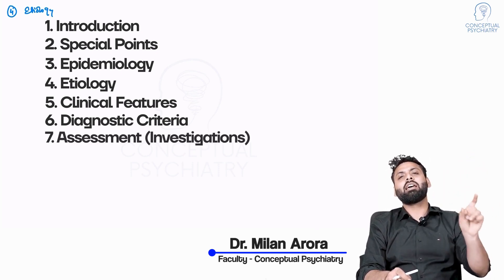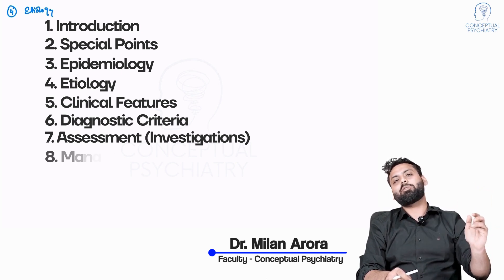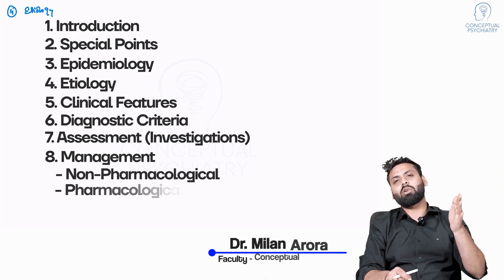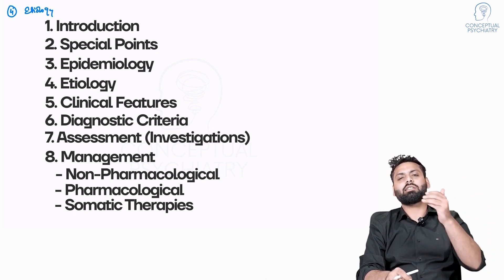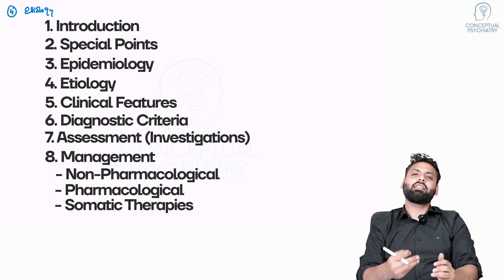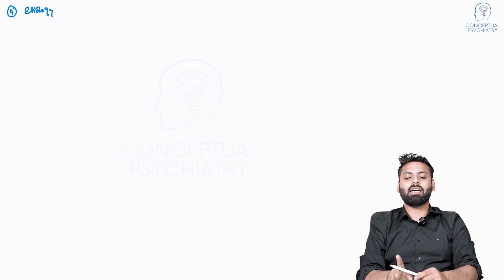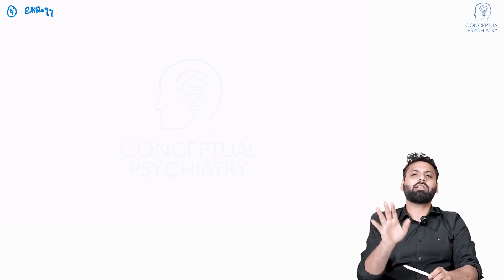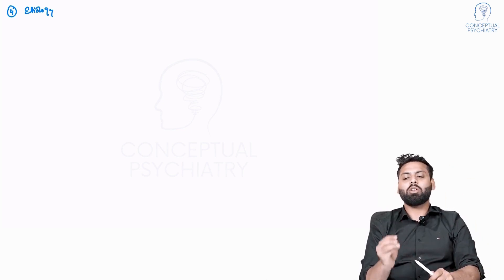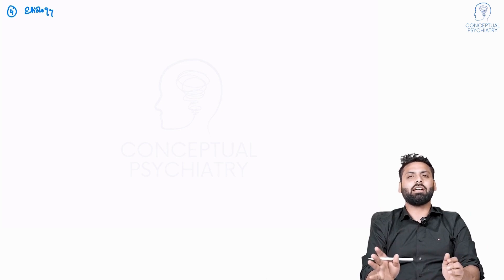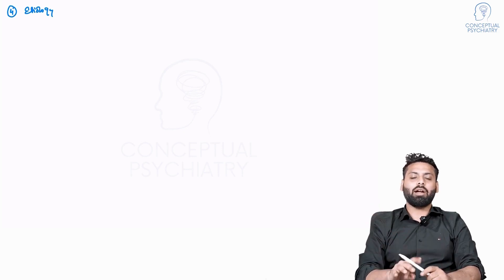Then we go to assessment — that is, investigations. Since we don't have specific investigations as such, we write the names of the relevant scales. Then we come to management, which we divide into non-pharmacological, pharmacological, and somatic parts. Somatic includes ECT, rTMS, tDCS, and similar. Finally, prognosis and prevention. These are basically 10 points. Any exam question comes for 10 marks — 10 points for 10 marks. Whenever you read a topic, clutch these 10 points. Fifteen pages of reading should suffice your 10 points and then your topic is prepared for exam purpose.